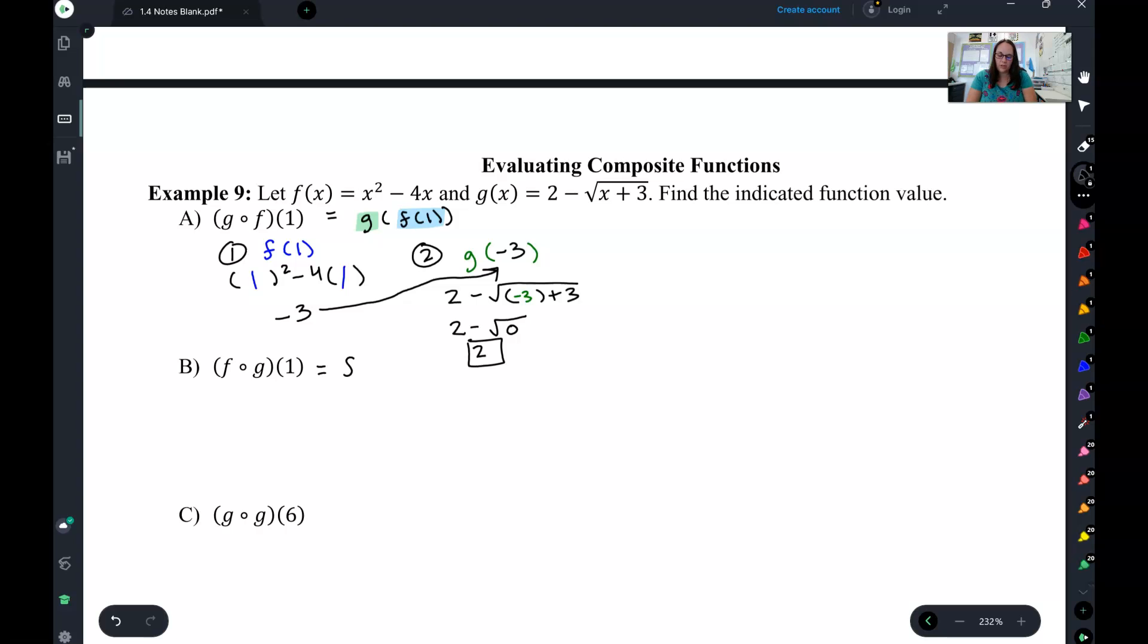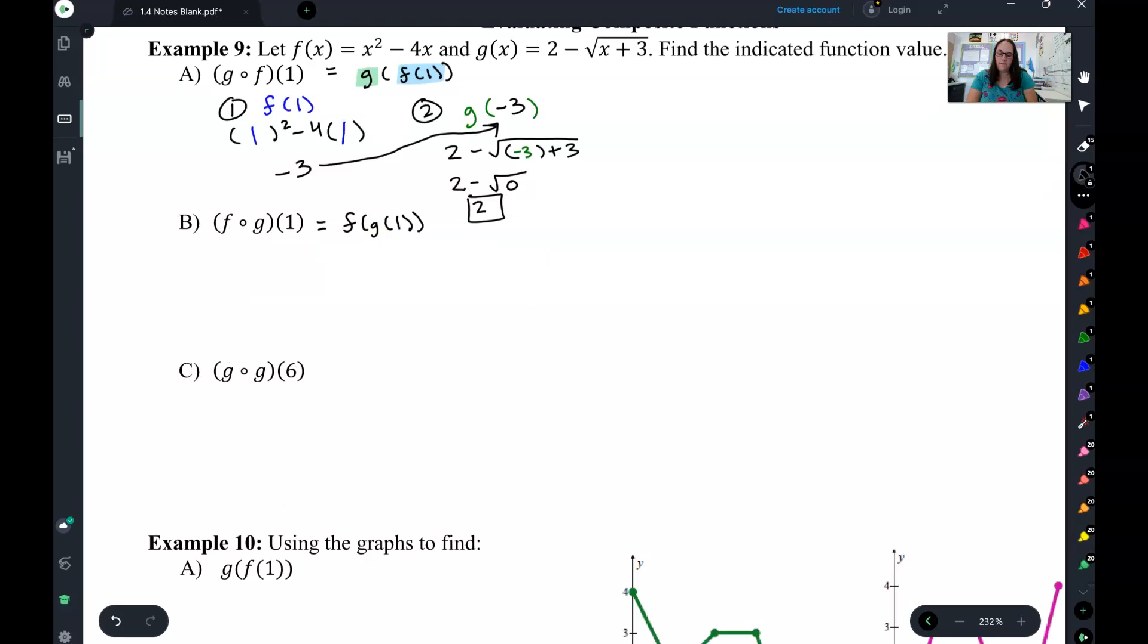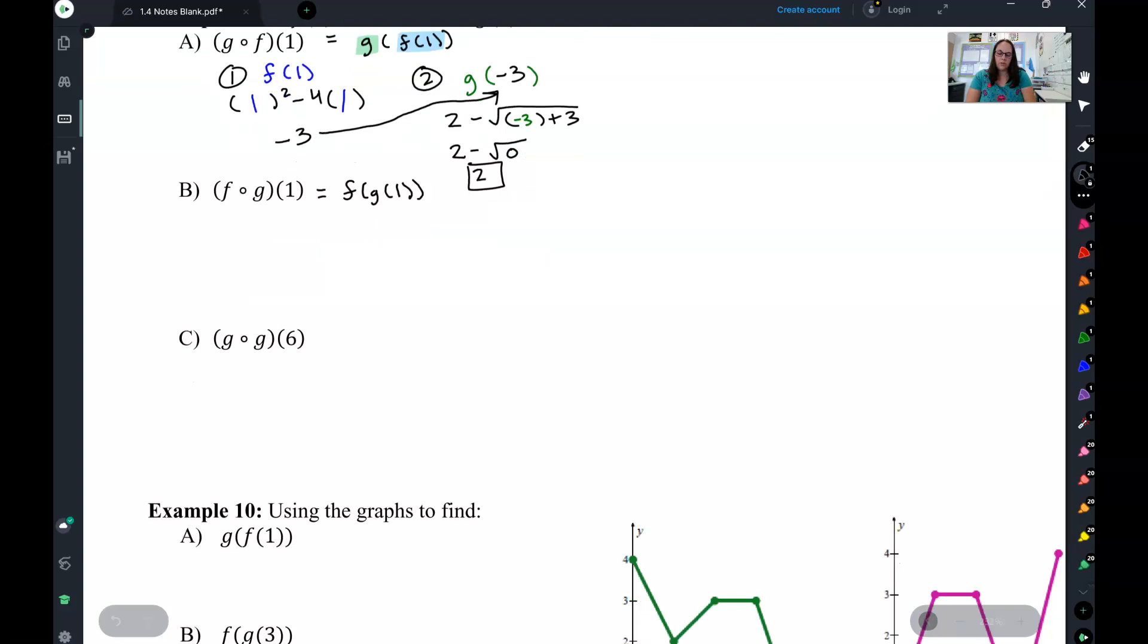So let's try this on one more, f of g of 1. First step is to find g of 1. That's my inside. So I take my g function and I plug 1 into it. That's my g of 1. Let's solve this. I get 2 minus square root of 4, which is 2 minus 2 is 0.